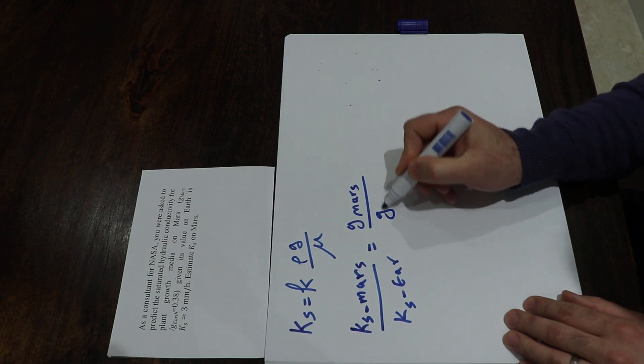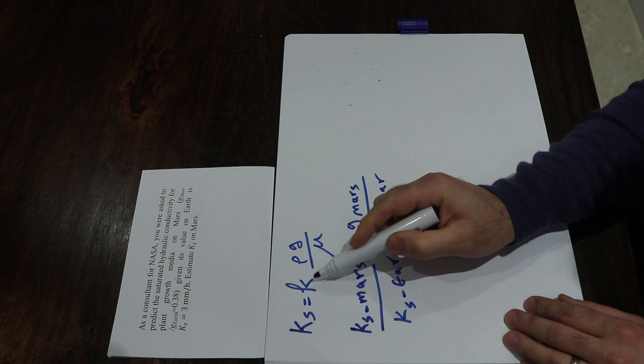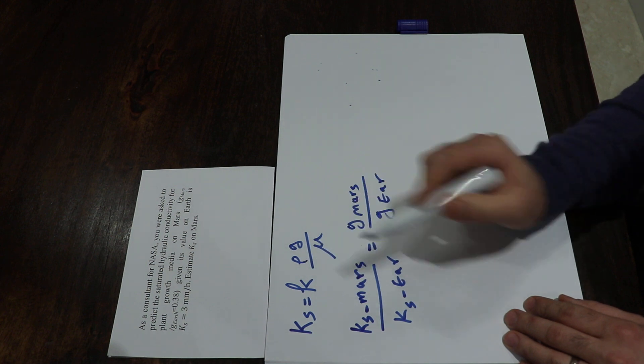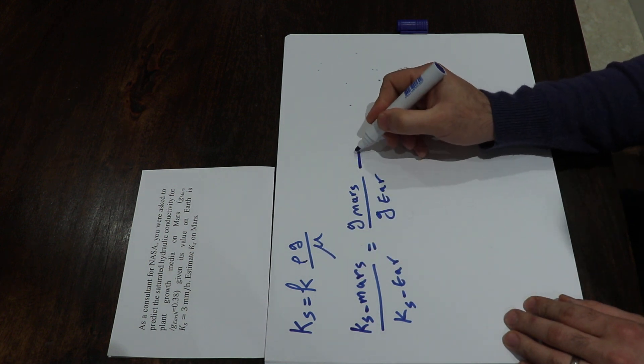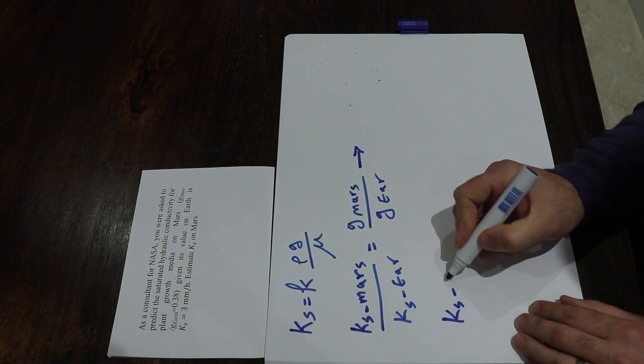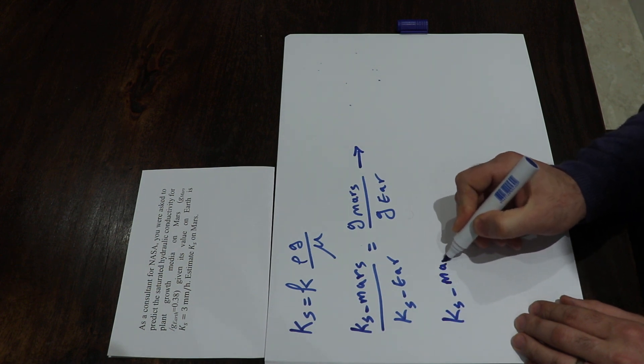Okay, because K, the permeability, and density and viscosity remain constant here. Therefore Ks Mars will be equal to Ks Earth times G Mars over G Earth.